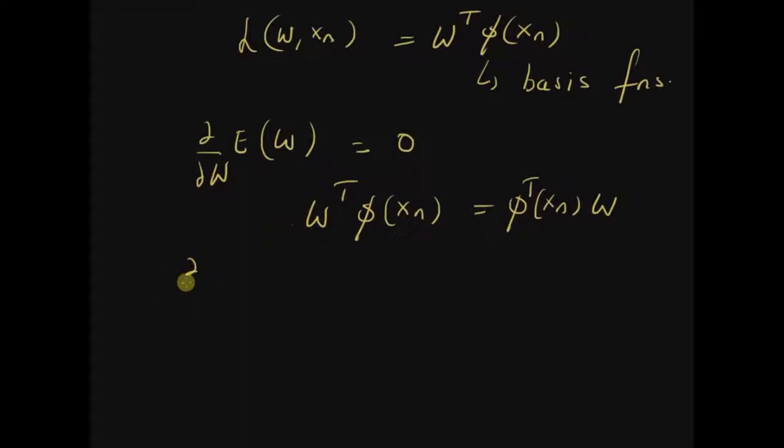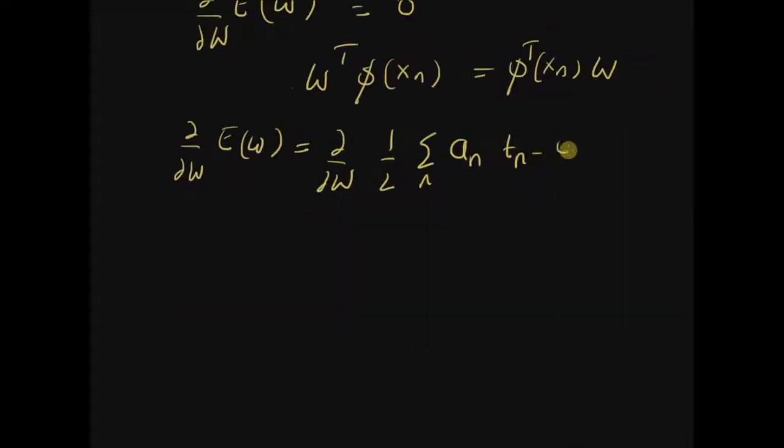So the derivative of the error function is equal to derivative of 1/2 the sum a_n (t_n minus phi transpose (x_n) w) squared, and this should be equal to 0.